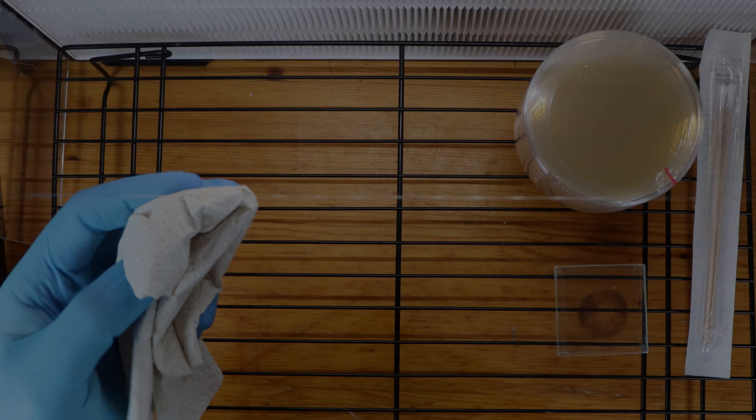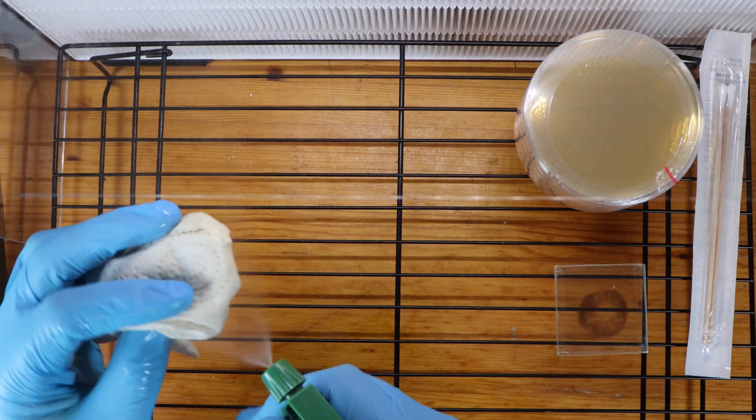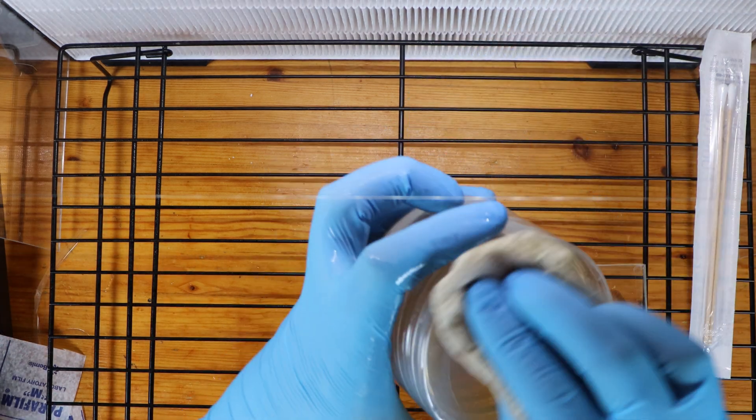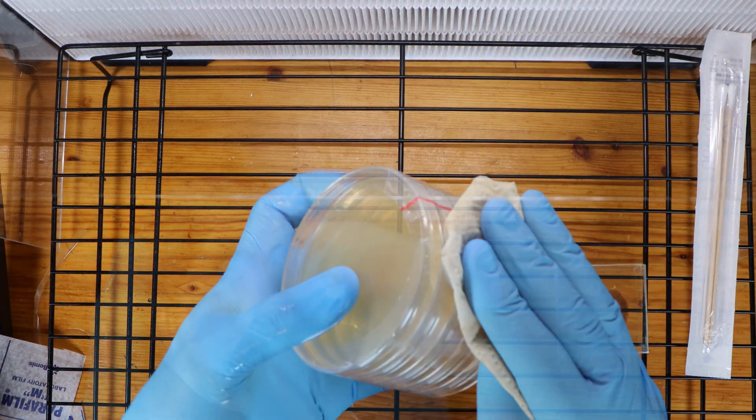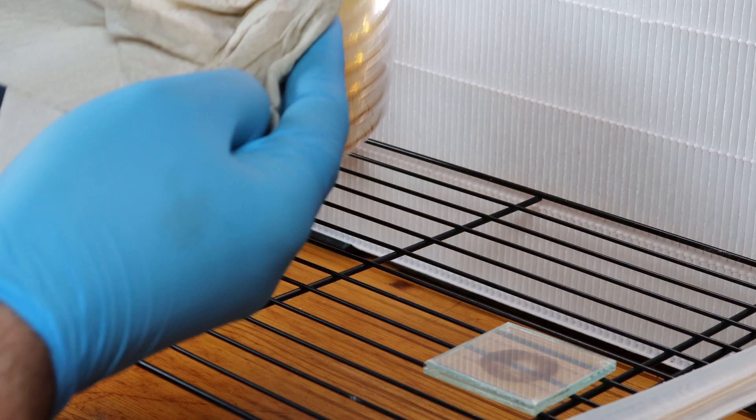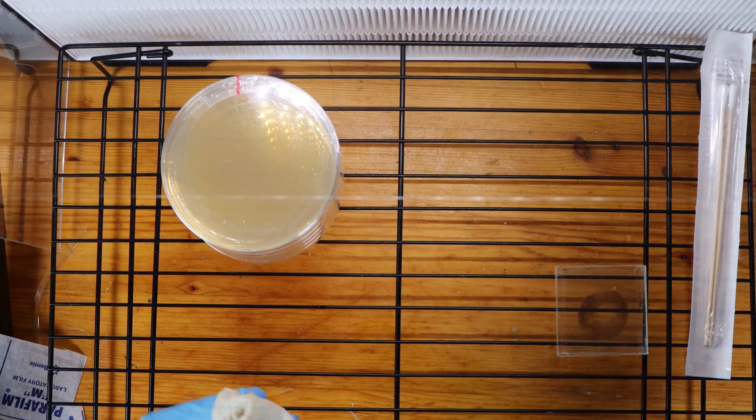Okay, first we want to sterilize all surfaces we'll be in contact with. This includes gloves, the petri dishes, the spores, the work surface as well. We're wiping them down with a 70% isopropyl alcohol solution. And this sterilizes things quite nicely.